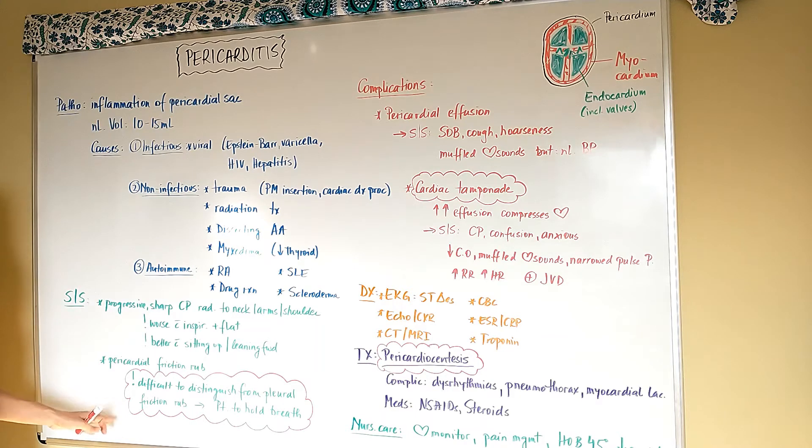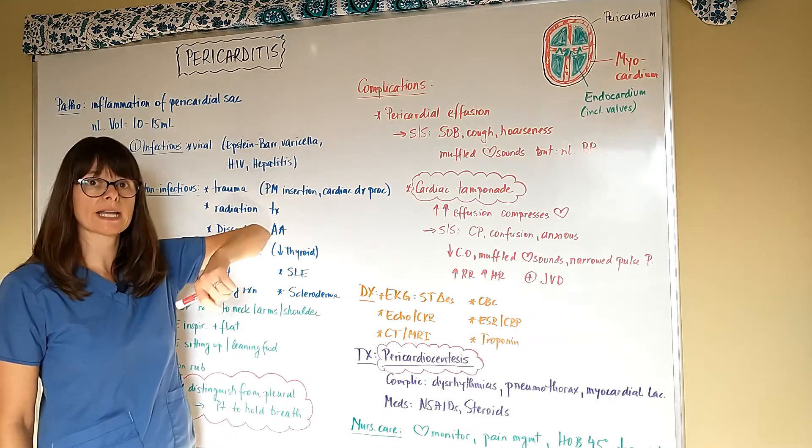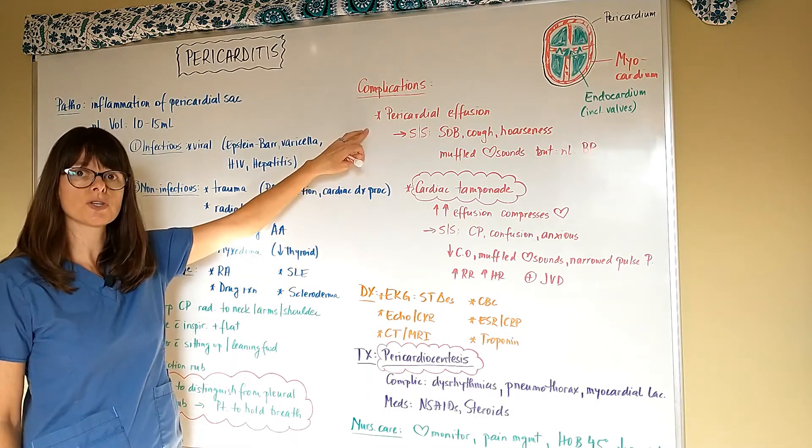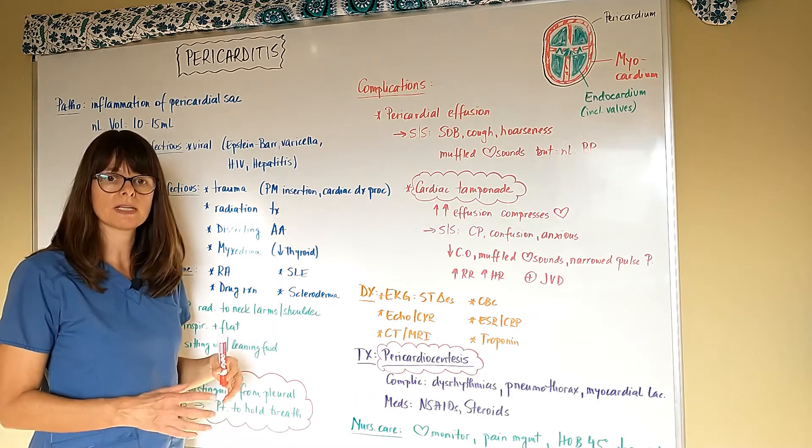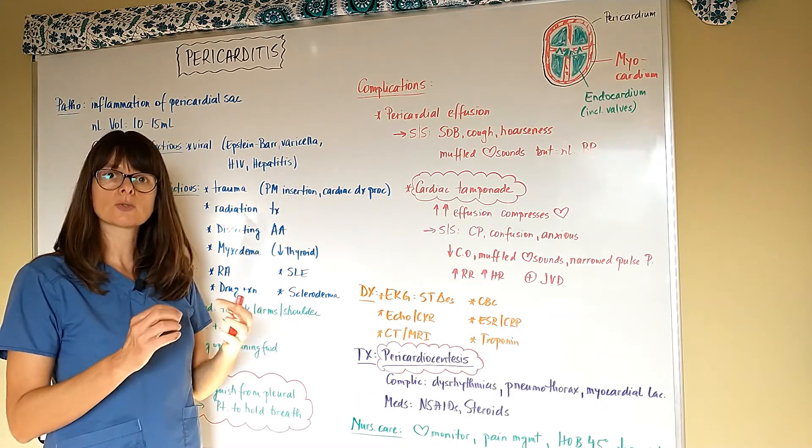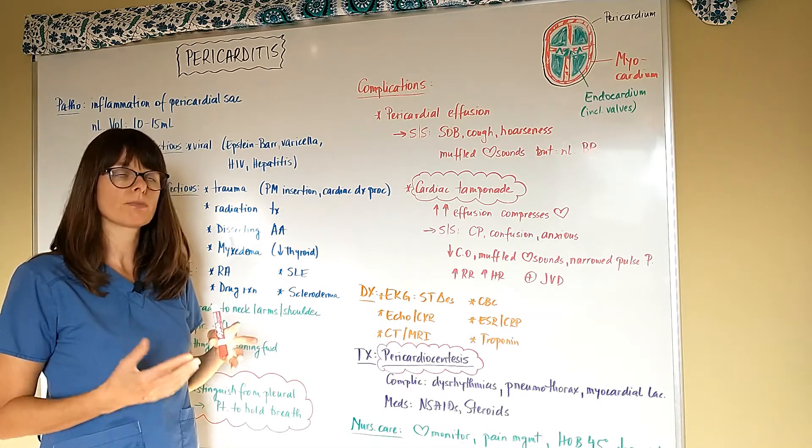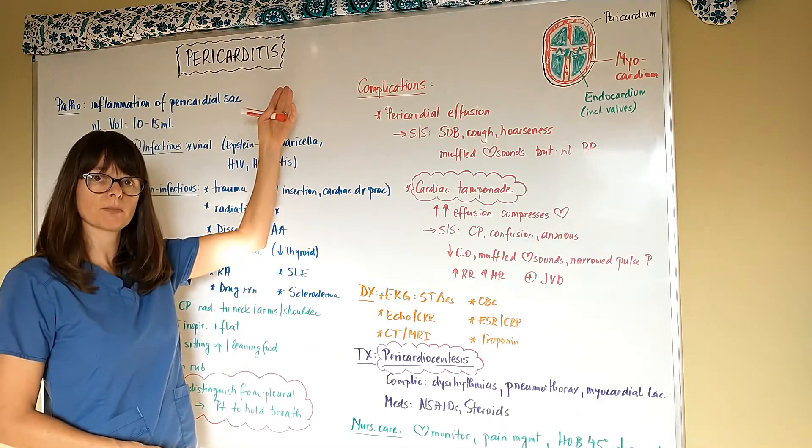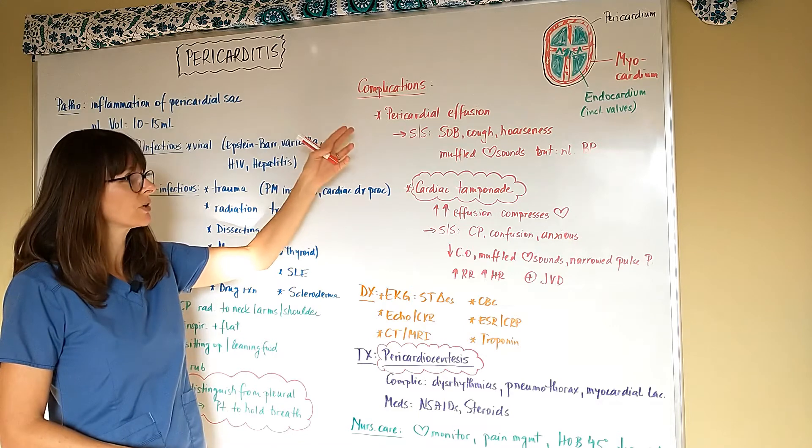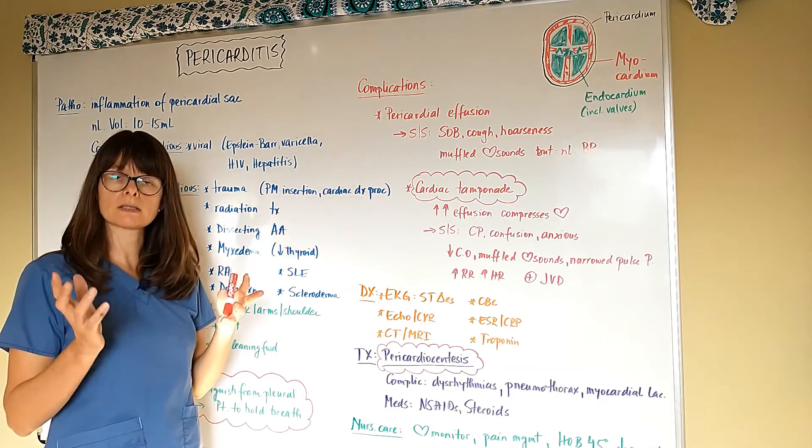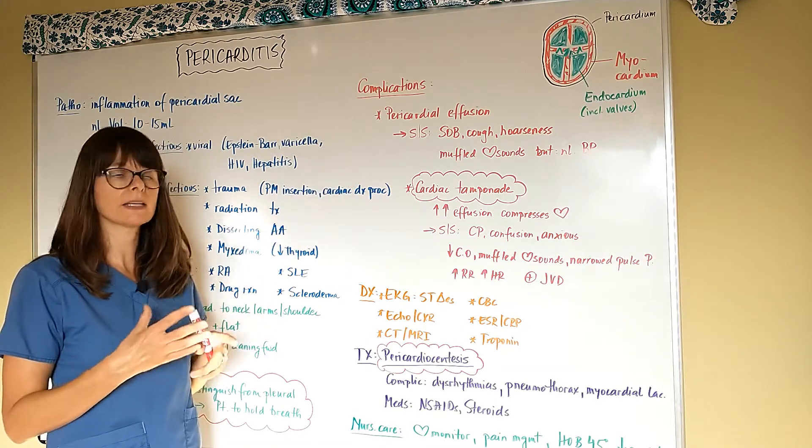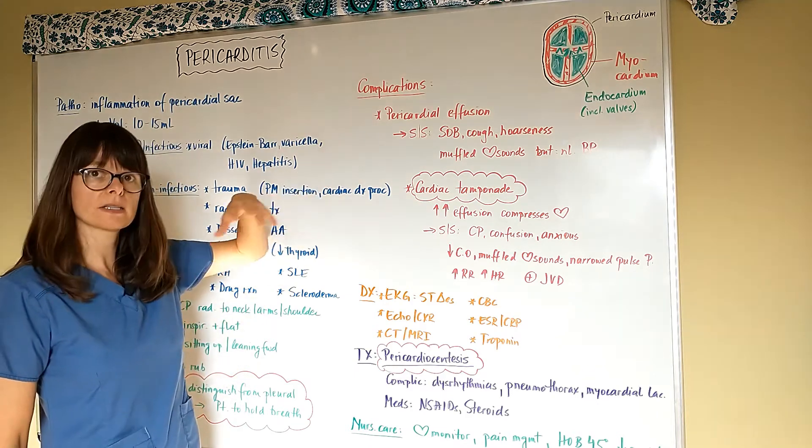Complications from pericarditis include pericardial effusion. Effusion basically means there's extra amounts of liquid in that pericardial sac. Because remember, with any inflammation—pericarditis is inflammation—the white blood cells, the lymphocytes, the mast cells will get there trying to battle the inflammation, which leads to more fluid accumulation.